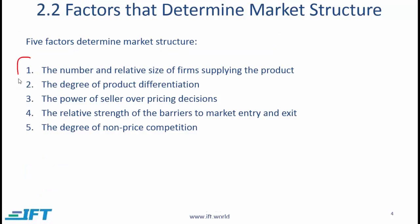These are the factors which determine market structure. Number one, the number and relative size of firms supplying the product. Number two, the degree of product differentiation. Number three, the power of seller over pricing decisions — in other words, the pricing power of the seller. Number four, the relative strength of the barriers to market entry and exit, and finally, the degree of non-price competition. Note that we are talking about non-price competition because in all markets there will be some price-related competition.